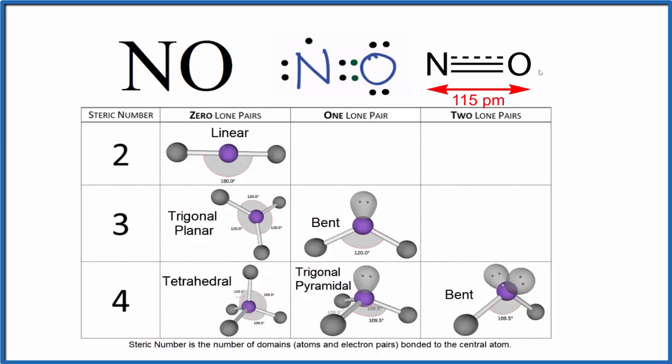So it can only be a straight line with a bond angle of 180 degrees. This is Dr. B with the molecular geometry for NO, nitric oxide, also called nitrogen monoxide. Thanks for watching.